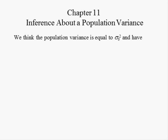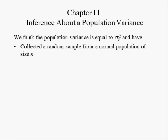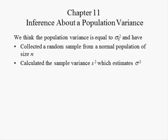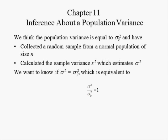Suppose we think the population variance is equal to the hypothesized value, some number denoted sigma-zero-squared, and have collected a random sample from a normal population of size n, calculated the sample variance S-squared, which estimates sigma-squared. We want to know if sigma-squared is equal to the hypothesized value sigma-zero-squared, which is mathematically equivalent to the ratio of sigma-squared and the hypothesized value being equal to one.